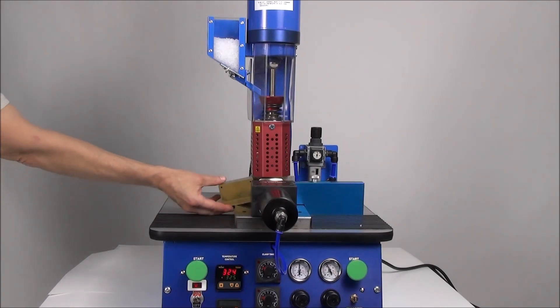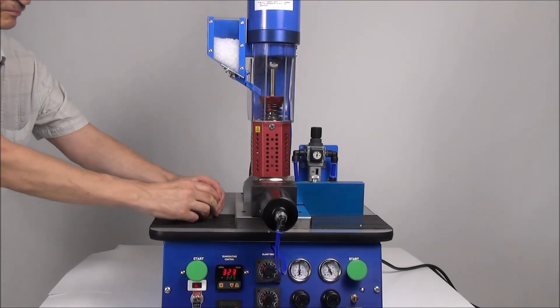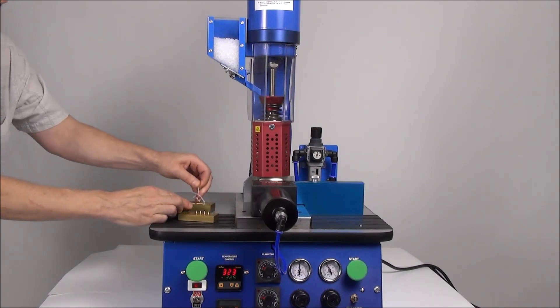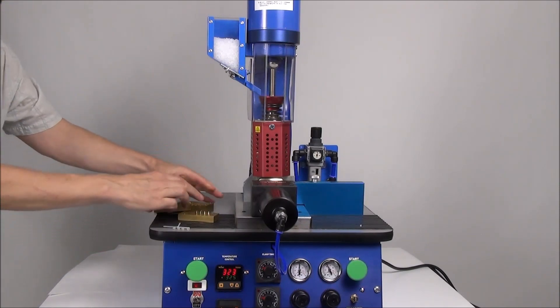The machine clamps the mold, injects the material, then unclamps and ejects the mold. The operator opens the mold and removes the part and closes the mold to prepare for the next injection.